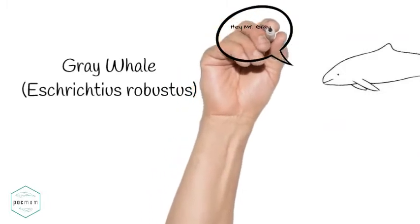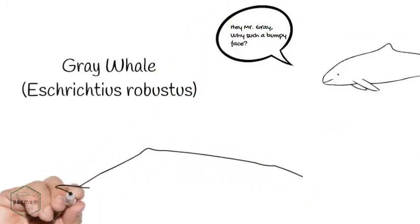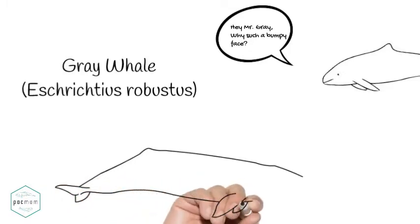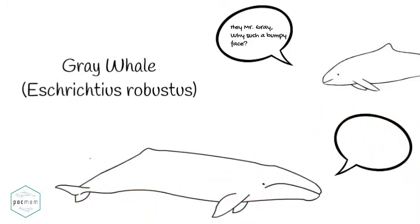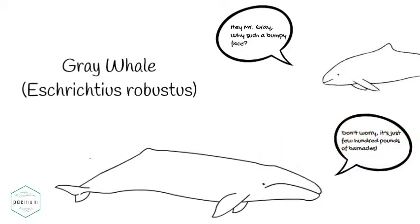The gray whale is a baleen whale that can measure up to 49 feet and weigh up to 45 tons. These whales do not have a dorsal fin, but rather a dorsal ridge or hump. They are unique because they feed on the bottom instead of in the water column and make feeding pits in the seafloor when snacking on invertebrates like ghost shrimp.